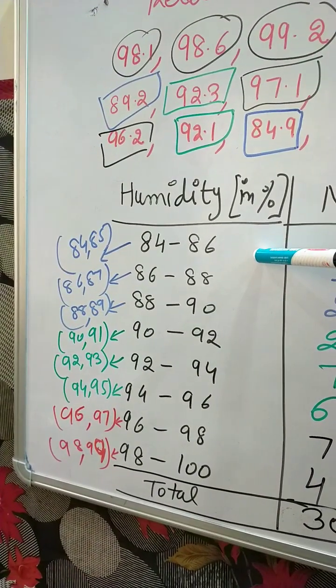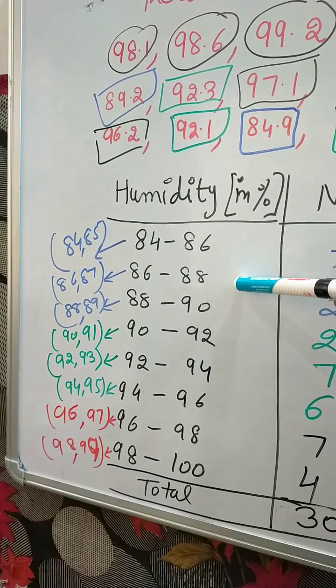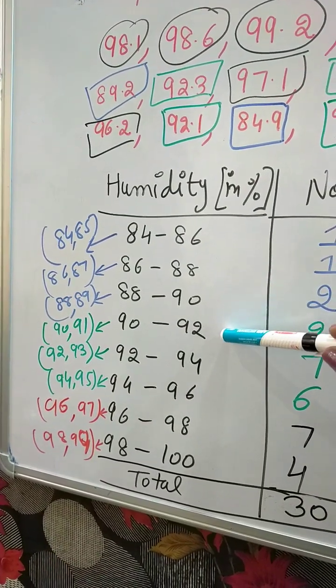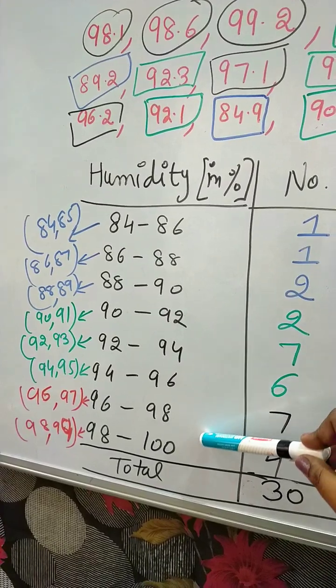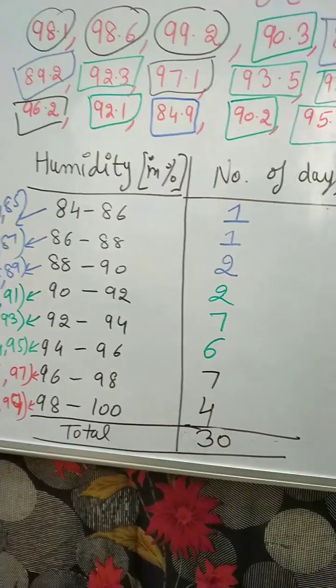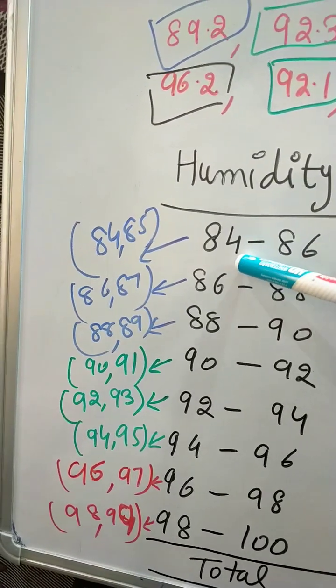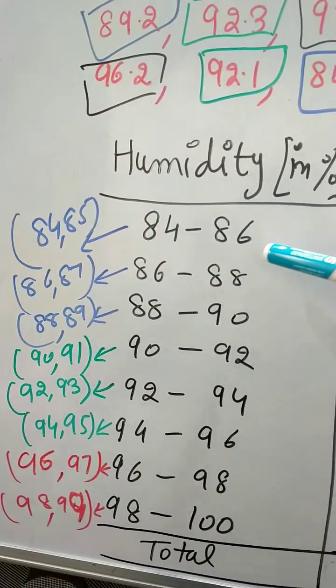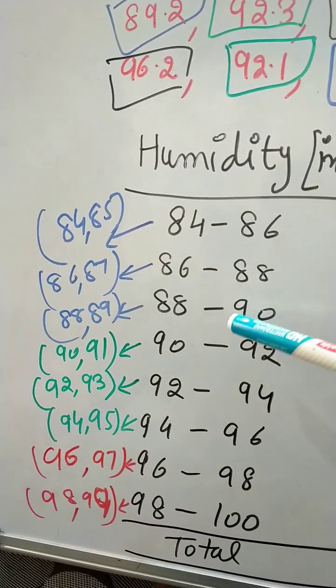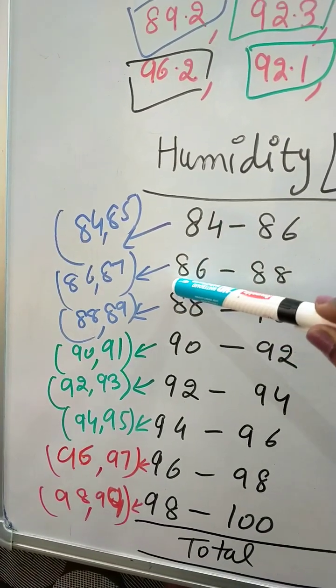to 86, this is given in the question. Second is 86 to 88, 88 to 90, 90 to 92, and so on up to 100. Next, for 84 to 86, we have to take 84 and 85. In this we will not take 86. Next, 86 and 87.